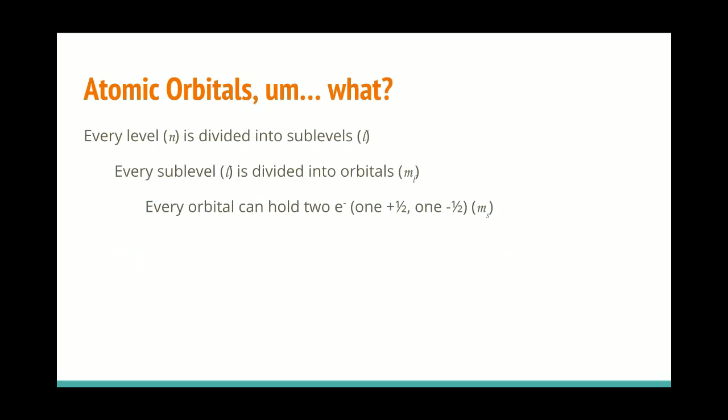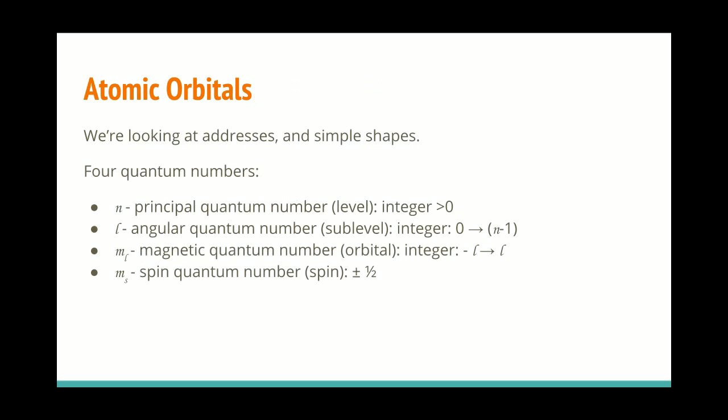What we're looking at is an address. We're looking at, sort of like a street address, has the person's name, the street address, then the state and the zip code and things like that, the country if you're mailing overseas. Each one of these describes a different region of space around the nucleus.